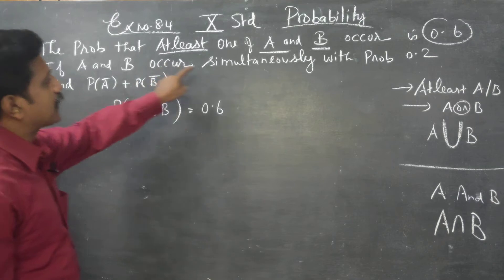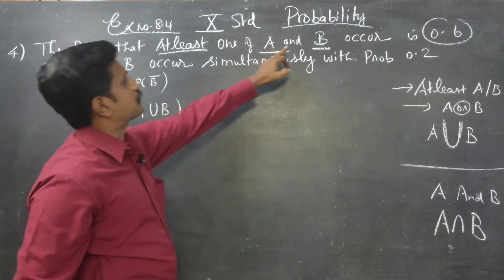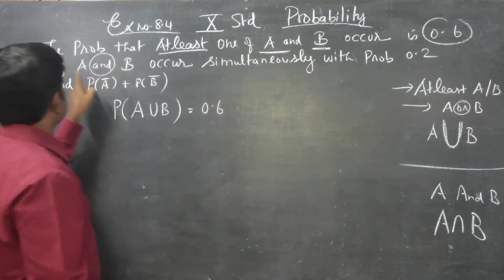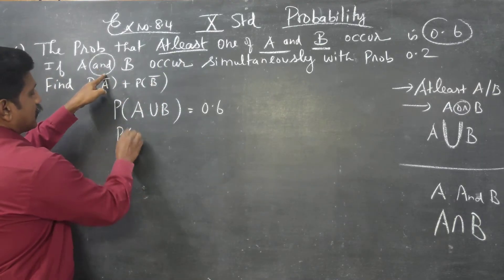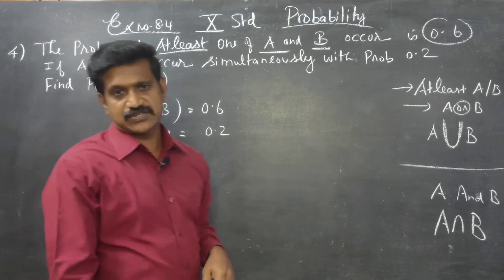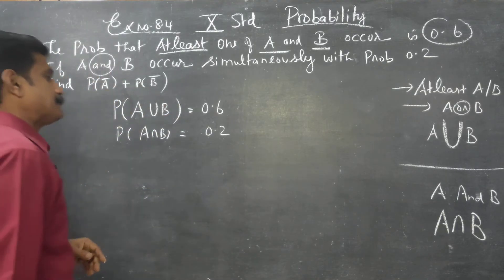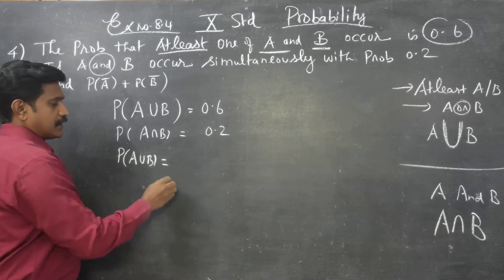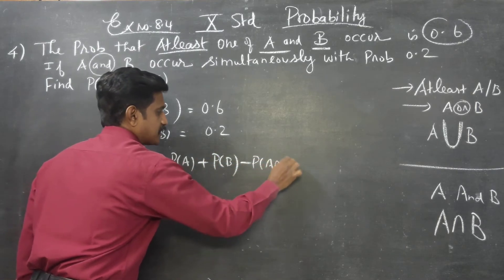If A and B occur simultaneously, that means A intersection B is equal to 0.2. Now we will start with the sum. Probability of A union B is equal to probability of A plus probability of B minus probability of A intersection B.